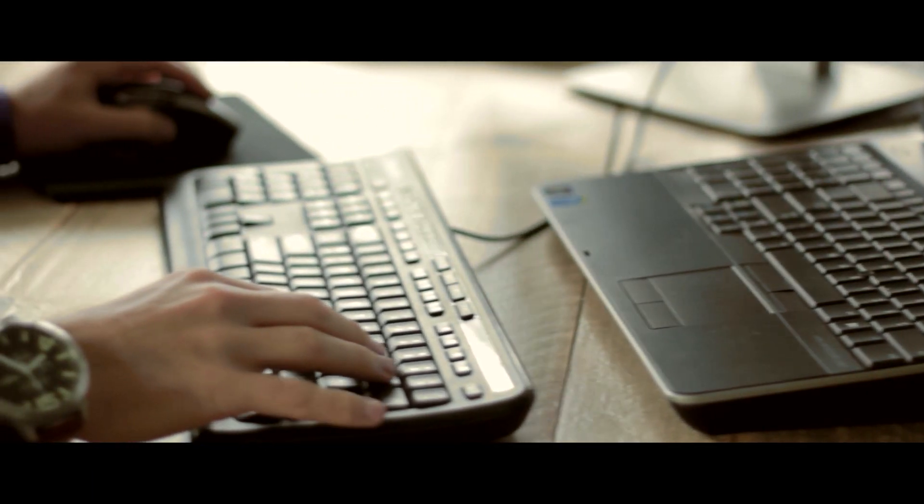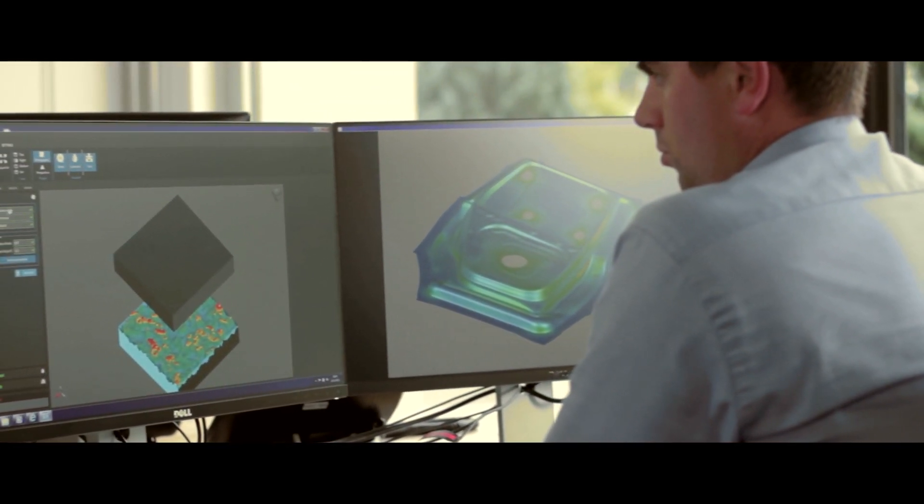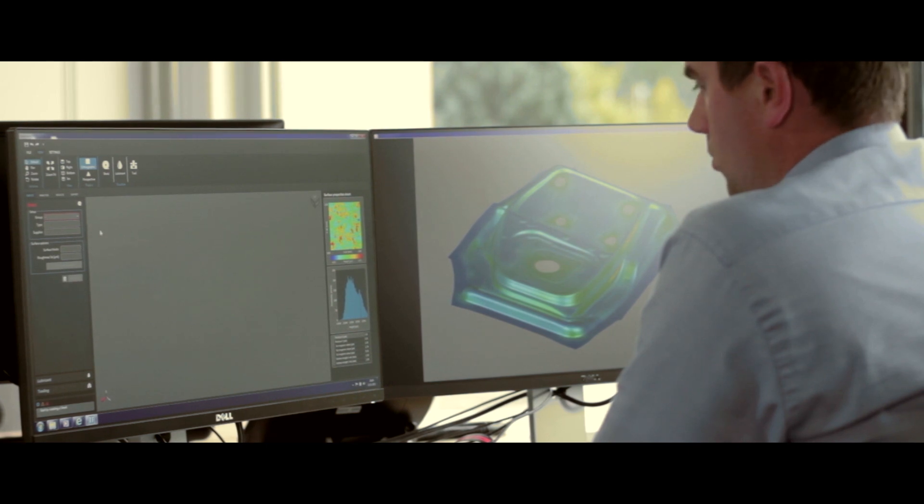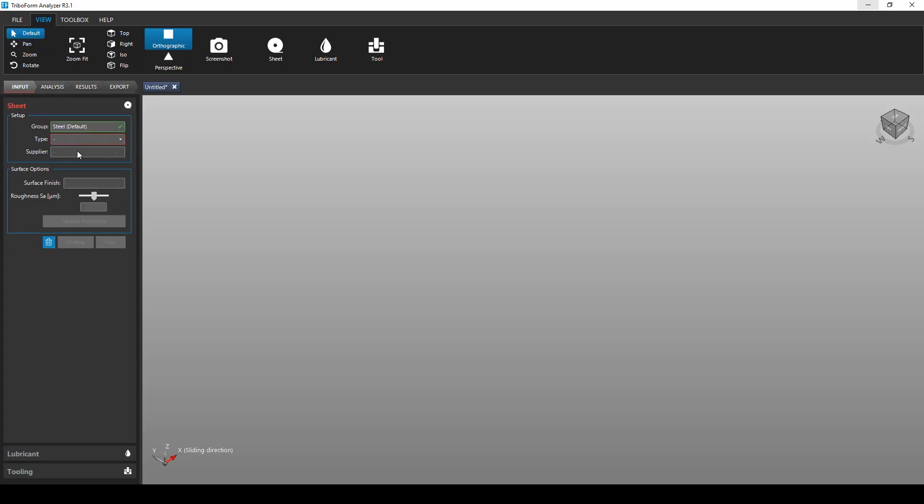A realistic friction model can substantially improve the accuracy of these forming simulations. The TriboForm software enables its users to generate these realistic friction models for different types of sheet materials, lubricants and tooling.